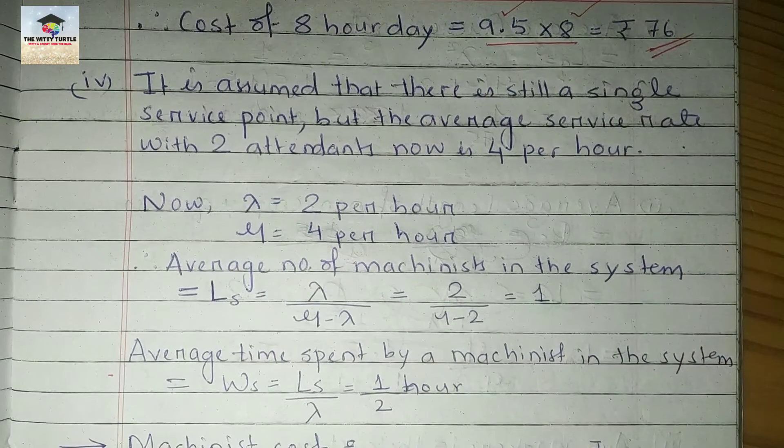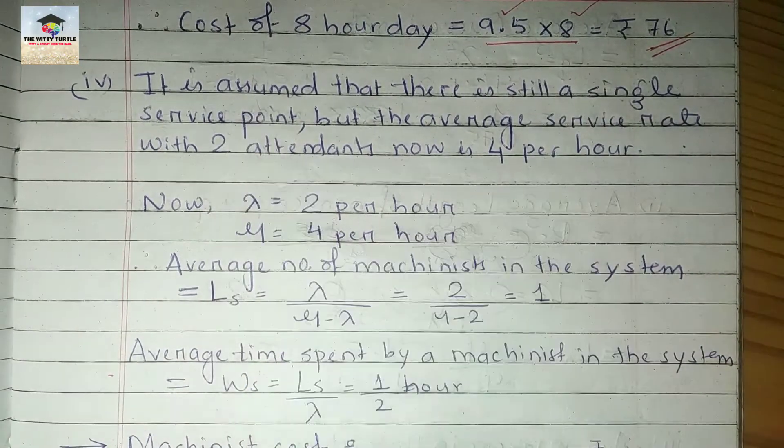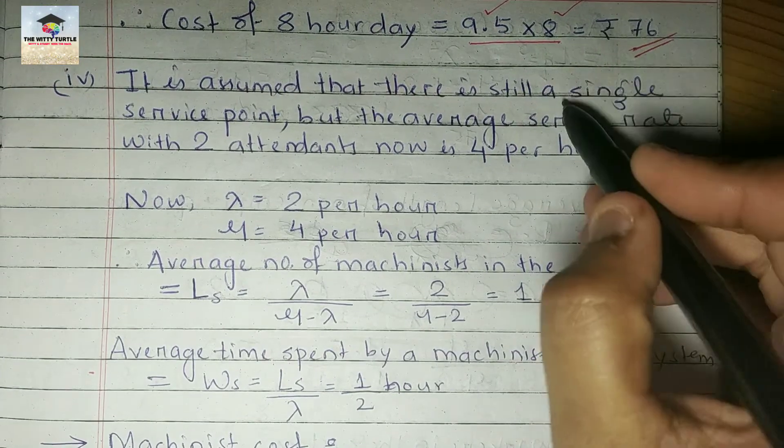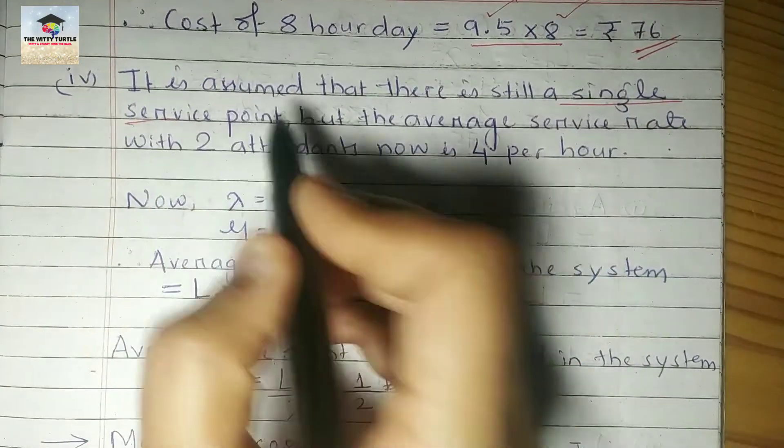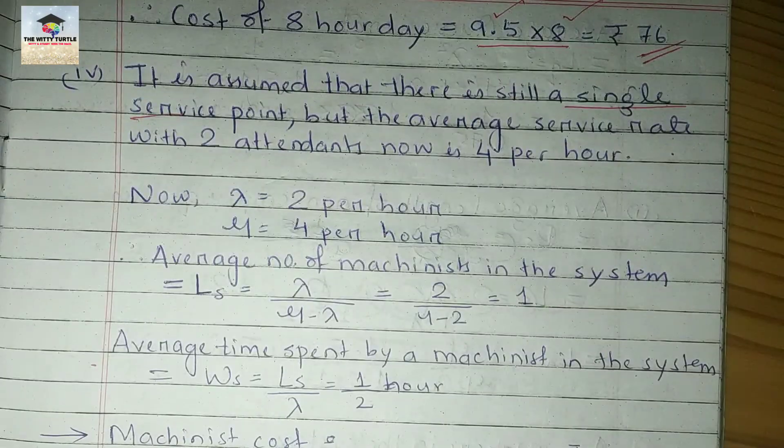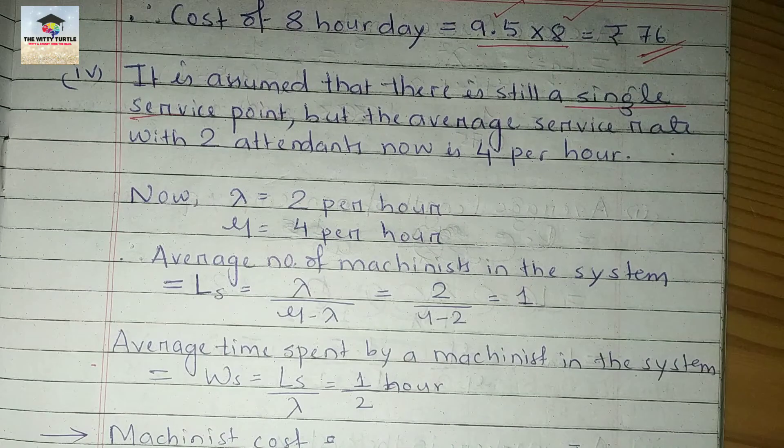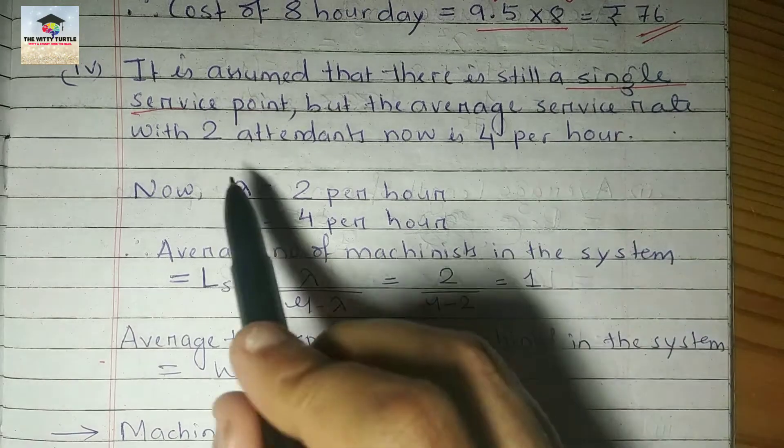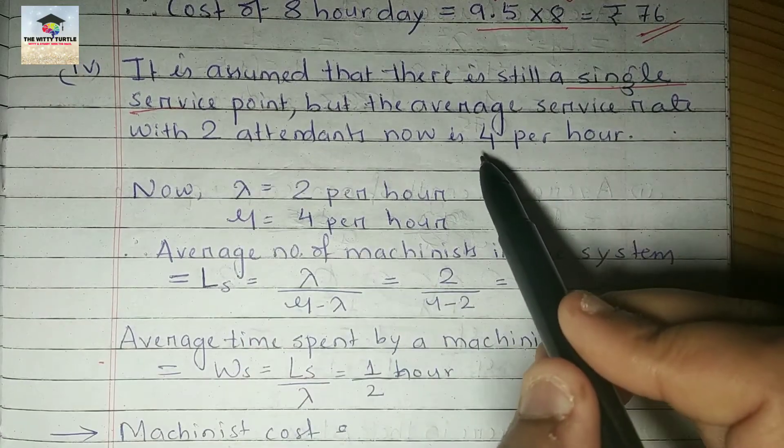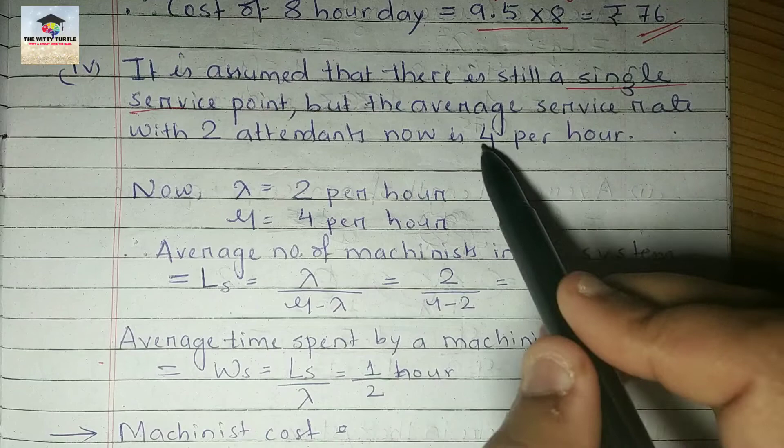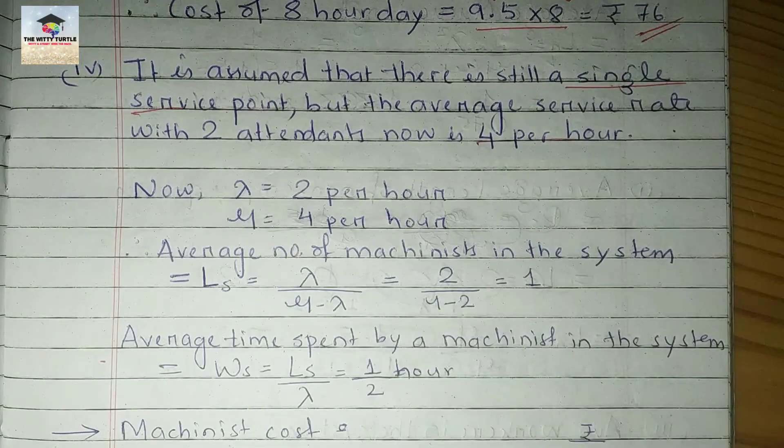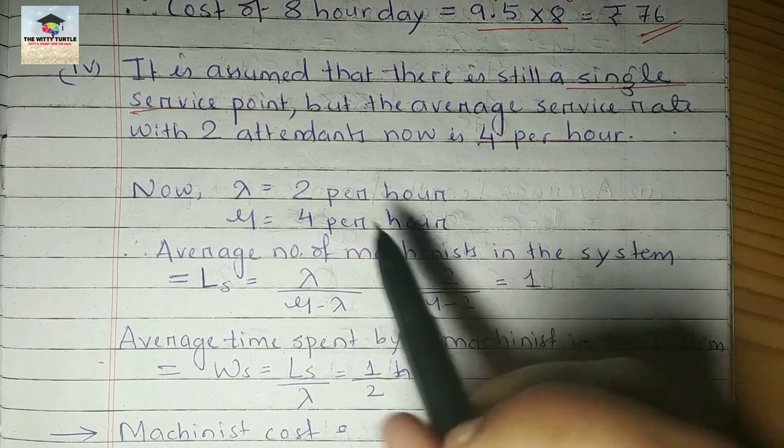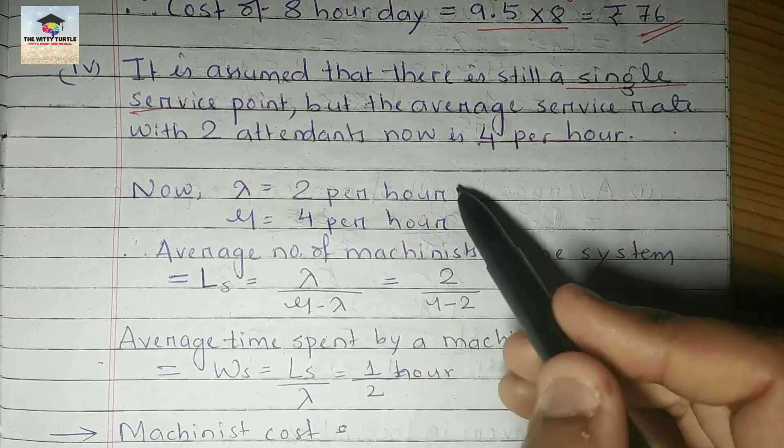Here we have to take another assumption that it is assumed there is still a single service point, because all the formulas we are applying belong to the single service point. But the average service rate with 2 attendants now will be 4 per hour, which was earlier 2.